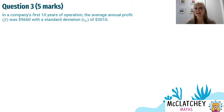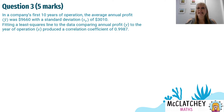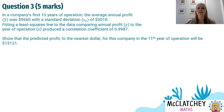It's a question worth five marks — that's five percent of the paper — so it's a fairly big chunk and important to be able to attempt this well. In a company's first 10 years of operation, the average annual profit, Y-bar (which is the mean), was $9,660 with a standard deviation SY of $3,010. Fitting a least squared line to the data comparing annual profit Y to the years of operation X produced a correlation coefficient R of 0.9987. Show that the predicted profit to the nearest dollar for the company in the 11th year of operations was $15,121. There's a lot going on here — lots of key information, very challenging to work out where to go with this.